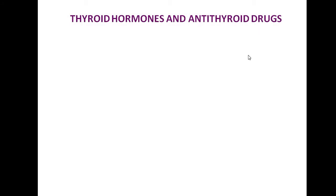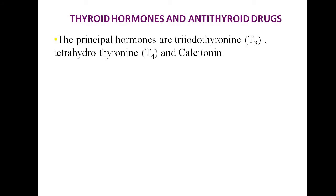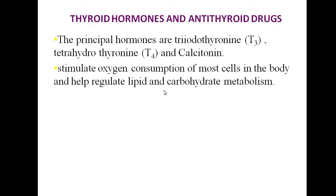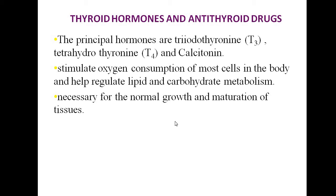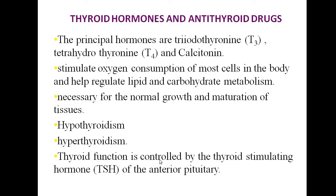The first part of today's lecture is more of a recapitulation or revision of what we have learned in physiology. The principal thyroid hormones are triiodothyronine (T3), tetraiodothyronine (T4), and calcitonin. We will be concentrating on T3 and T4. The basic function of thyroid hormones is to stimulate oxygen consumption in most cells and to help regulate lipid and carbohydrate metabolism. Thyroid hormones are necessary for normal growth and maturation of all tissues including nervous tissue. Deficiency results in hypothyroidism; excess causes hyperthyroidism. Thyroid function is controlled by TSH from the anterior pituitary under feedback control of the thyroid hormones.